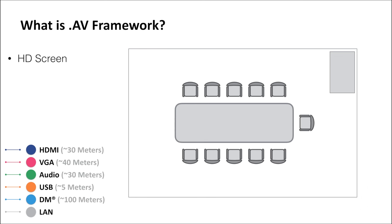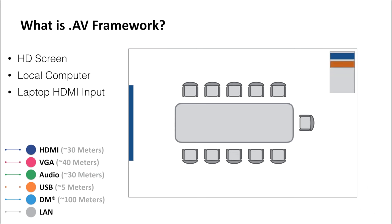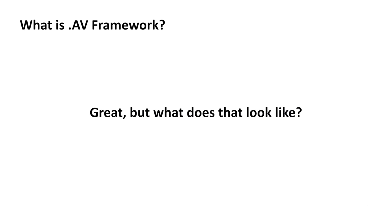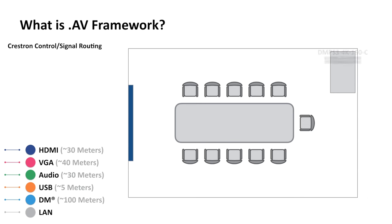Let's look at a sample room and envision how we're going to deploy our AV system. We know that we have a high-definition screen — we're going to place this in the front of the room. We're also going to add a local computer to the credenza in the back, an HDMI laptop connection, also a legacy VGA connection. We also want to add an HDMI connection to the table. We'll go ahead and add the heart of our system — the DMPS3 4K 150C — to this room. We're going to connect that to our local AV network, so we're adding a small Netgear switch. Note that this is one way of deploying it; many enterprise environments will have a large switch or multiple ethernet jacks.